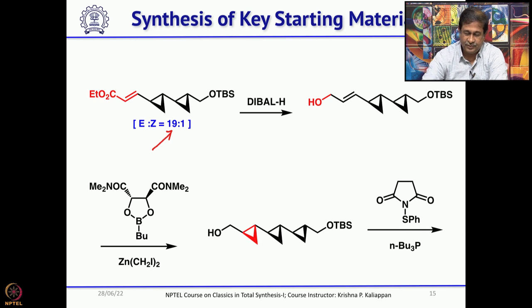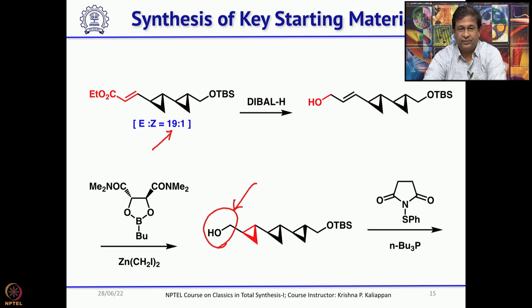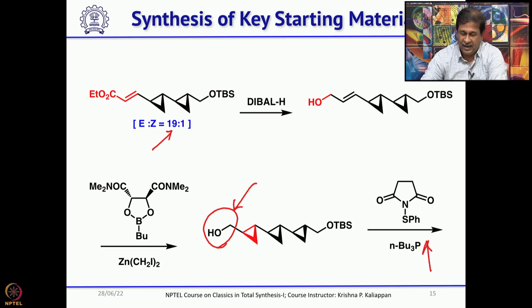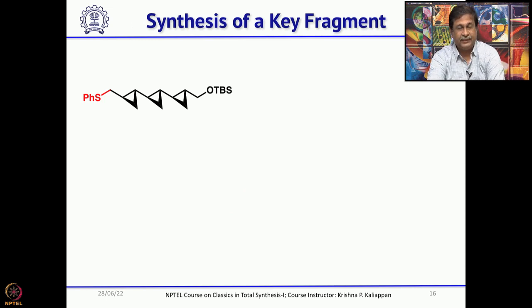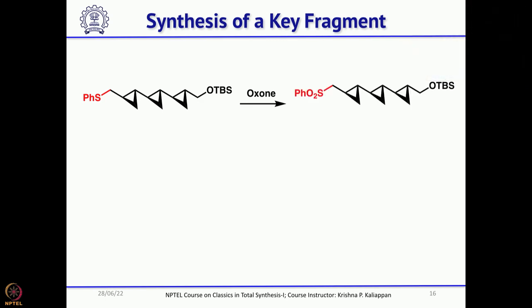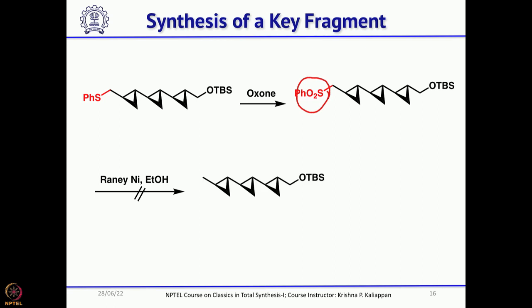The next step was to convert the CH₂OH into CH₃. First he wanted to convert the CH₂OH into the corresponding sulfone and then do reductive removal of SO₂Ph. The alcohol was converted into SPh using a Mitsunobu-type reaction by treating with tributylphosphine and N-phenyl sulfide, then oxidized with oxone to get the corresponding sulfone. However, he could not achieve removal of this sulfone to get the methyl group — he tried several conditions including Raney nickel in ethanol, but could not get the methyl group — so he concluded this was not the right strategy.